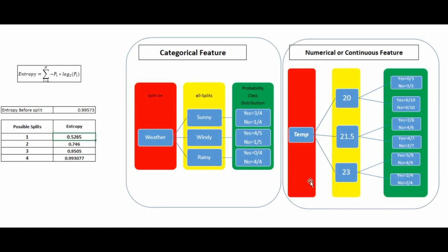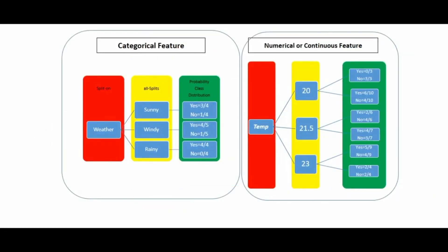In the categorical weather variable, the rainy node is already pure. We only have to check and further split the sunny and windy nodes. We keep splitting until we get pure nodes. However, in some cases, by over-splitting the data we might overfit the model. To reduce overfitting, we put thresholds on the number of leaf nodes — for example, if we allow only seven leaf nodes, the tree will not grow beyond that, protecting the model from overfitting.